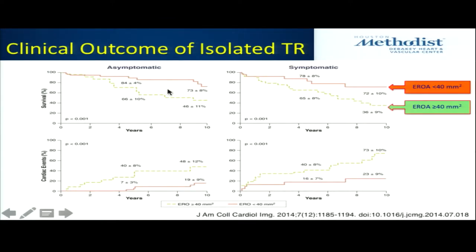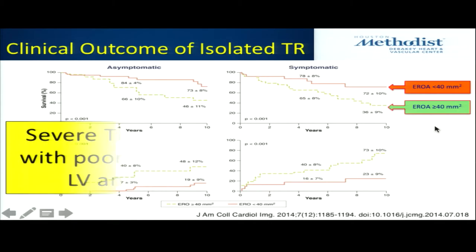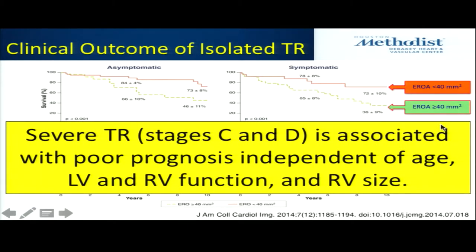Even looking at symptomatic versus asymptomatic patients, it doesn't matter — in every category you can differentiate prognosis on TR severity. So it's not benign, it's not incidental, and it shouldn't be the last line of the echo report. Severe TR at any stage, symptomatic or asymptomatic, is associated with poor prognosis — independent of age, LV function, RV function, and RV size. TR always matters.